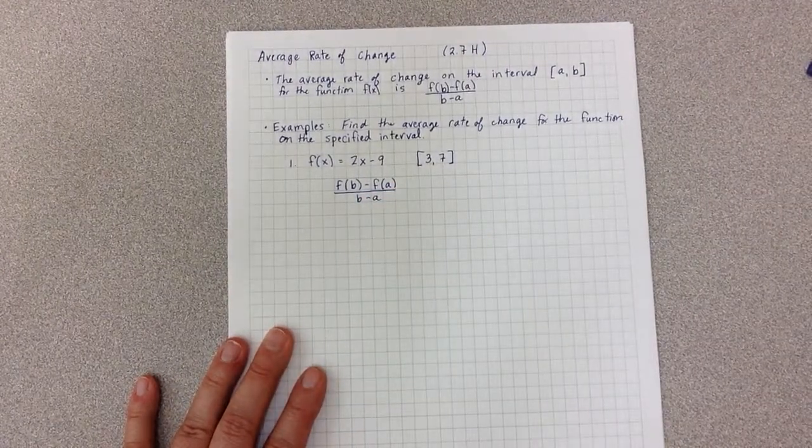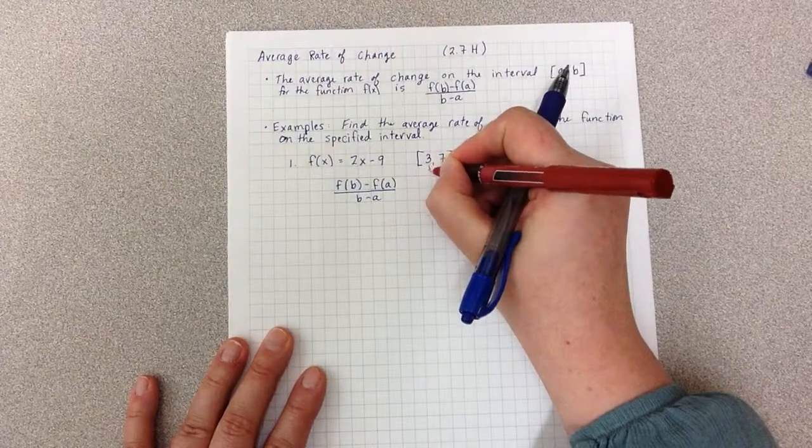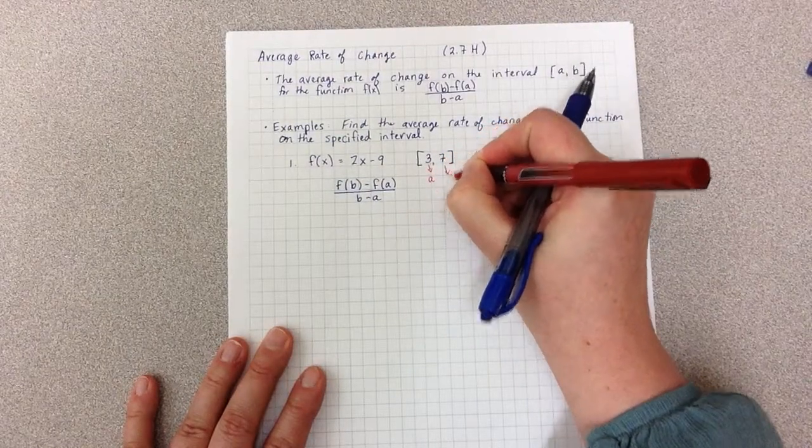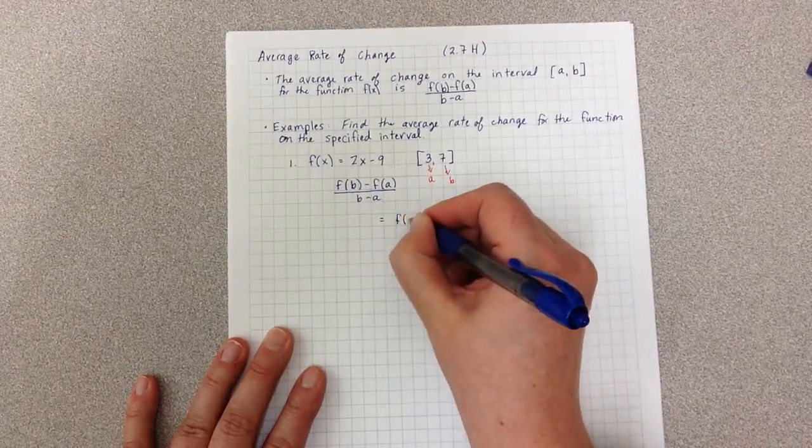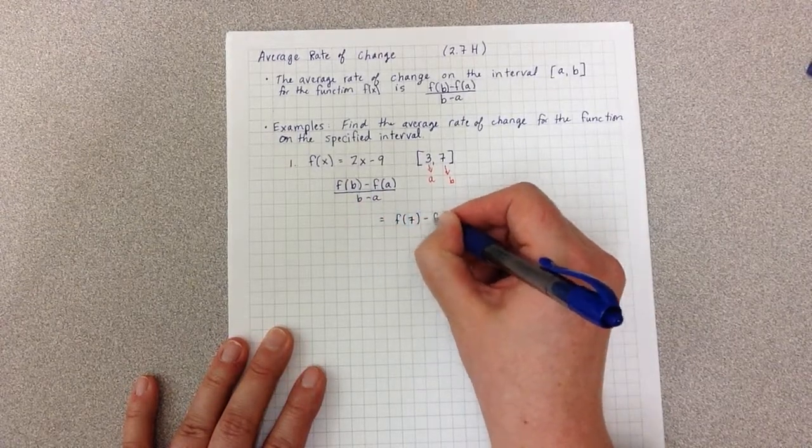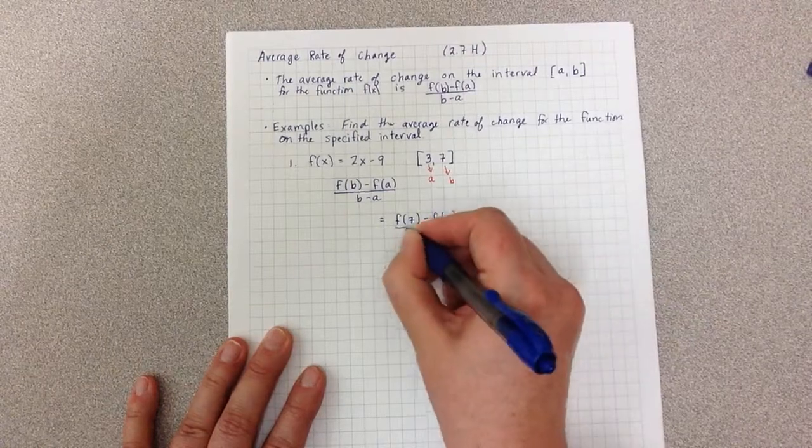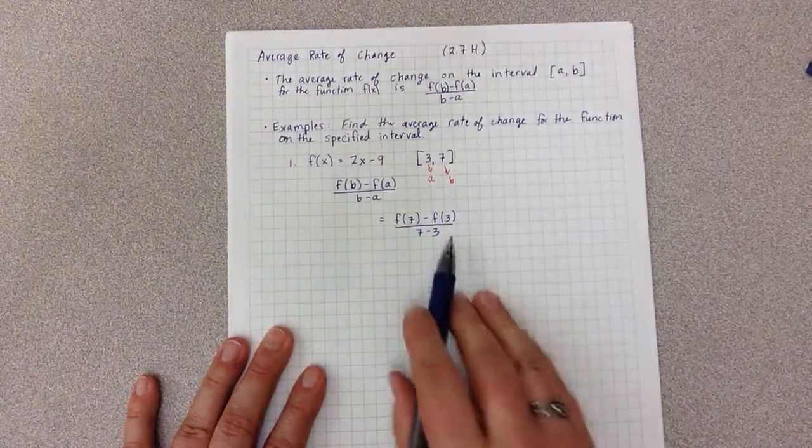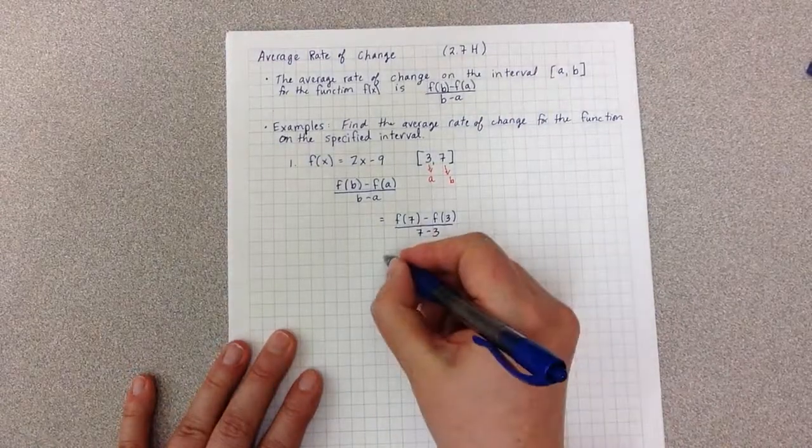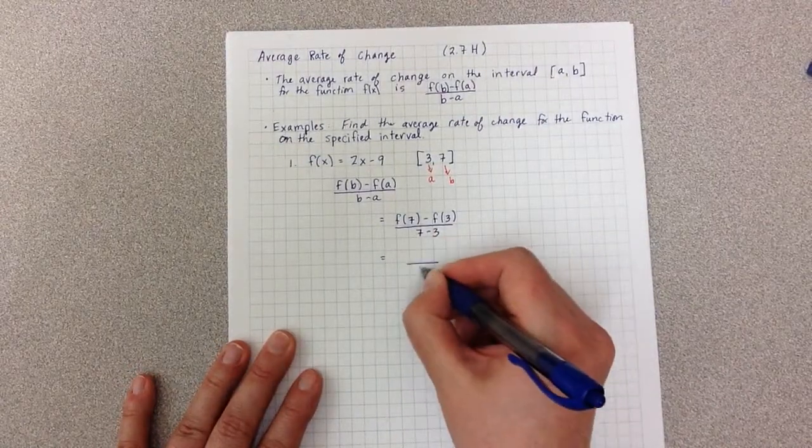I then am going to substitute in my b and my a. 3 is my a and 7 is my b. So I have f(7) minus f(3) all over 7 minus 3. Now the denominator is straightforward to simplify. 7 minus 3 is 4.